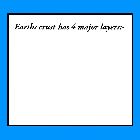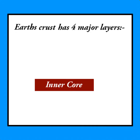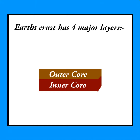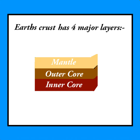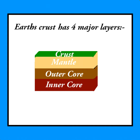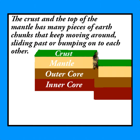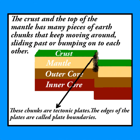Earth's crust has four major layers: inner core, outer core, mantle, and crust. The crust and the top of the mantle has many pieces of earth chunks that keep moving around, sliding past or bumping into each other. These chunks are called tectonic plates.